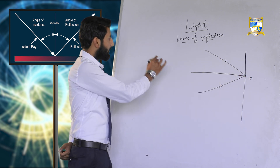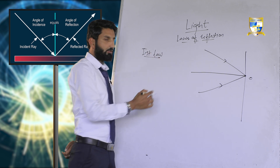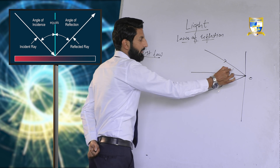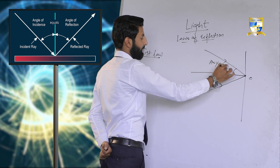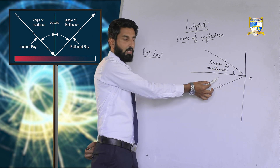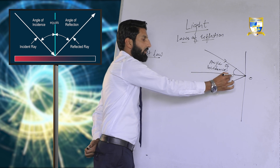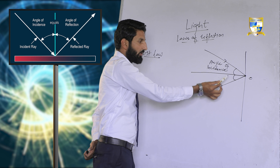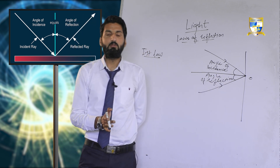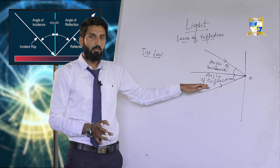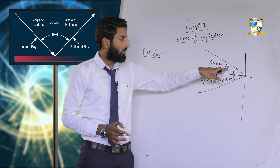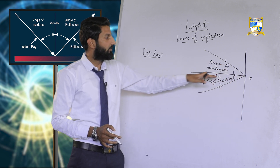The first law of reflection states that the angle between the incident ray and the normal — that is the angle of incidence — is always equal to the angle made by the reflected ray with the normal — that is the angle of reflection. In simple terms, the angle of reflection is always equal to the angle of incidence.